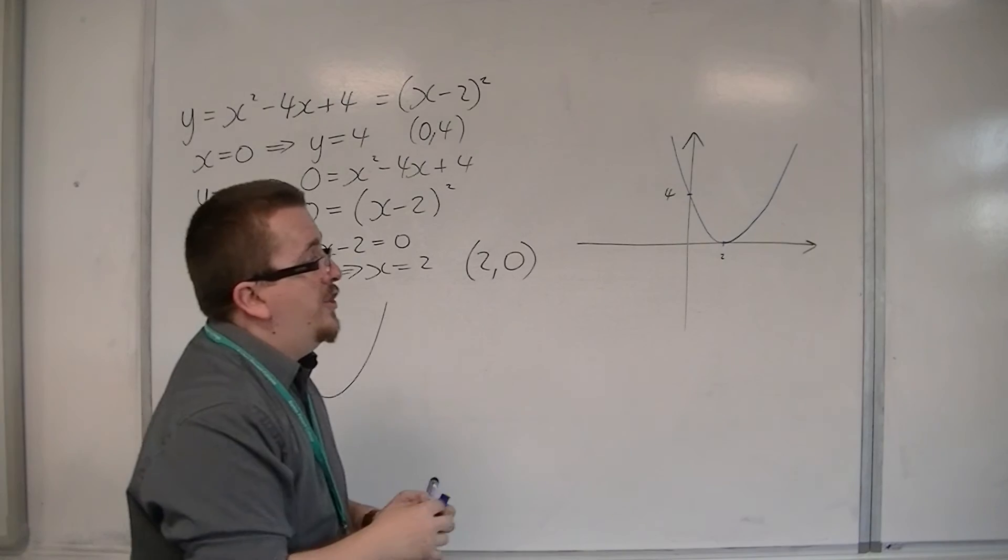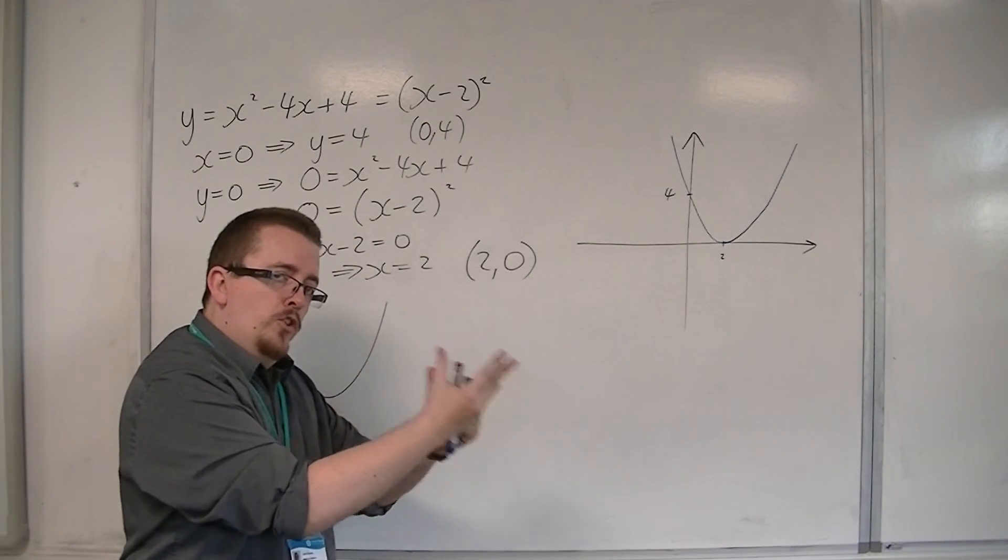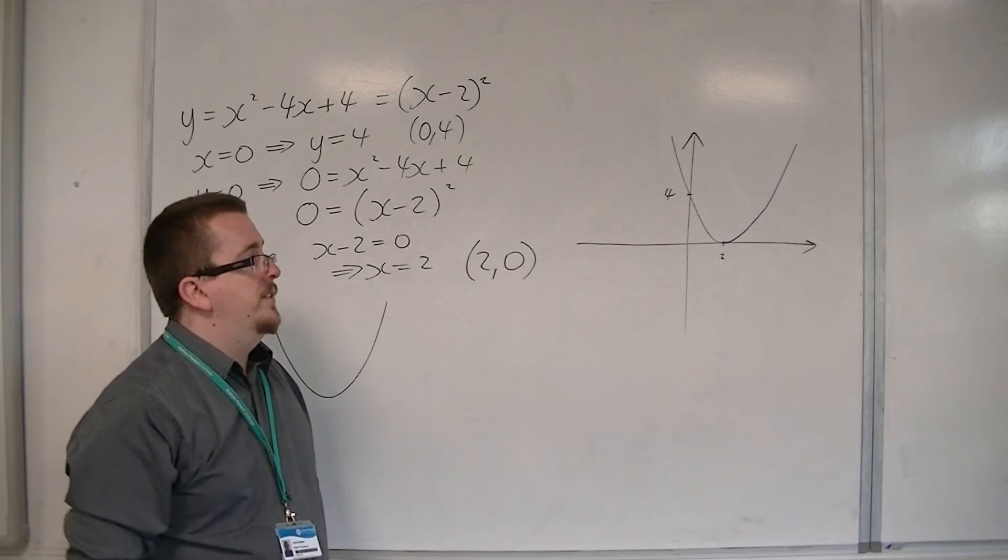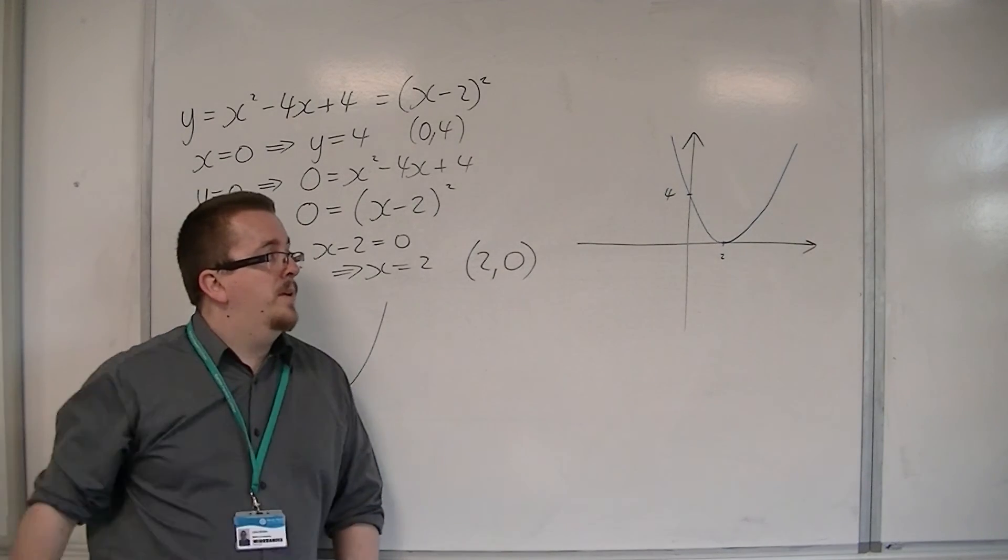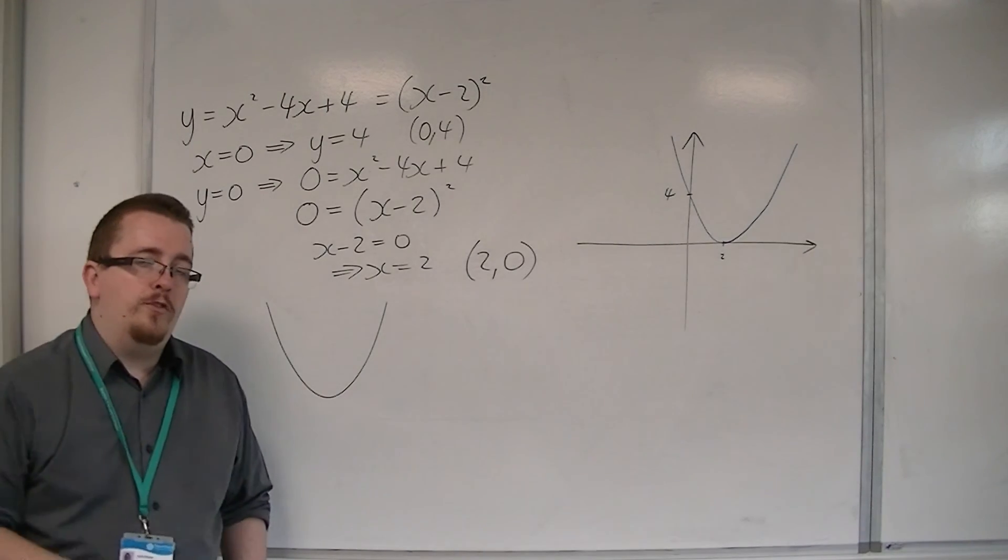So you can see that it's just the y equals x squared curve that's been shifted two steps to the right. And that's going to become more apparent when we look at graph transformations later.